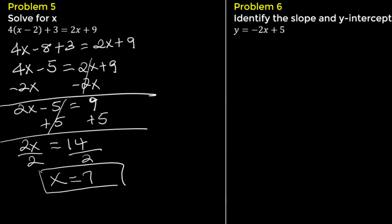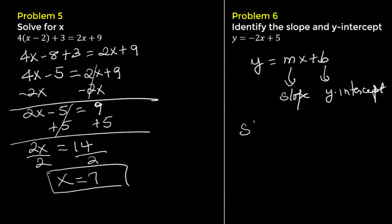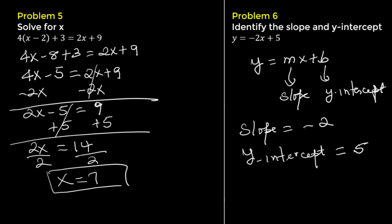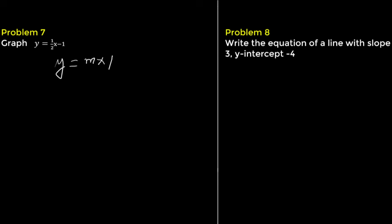Problem 6. Identify the slope and y-intercept of the equation y equals negative 2x plus 5. The equation of a line in slope-intercept form is y equals mx plus b, where m is the slope and b is the y-intercept. According to the equation, the slope is negative 2 and the y-intercept is 5.